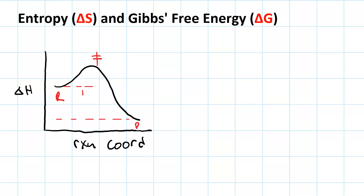Delta H of the reaction is the delta H of the products minus the delta H of the reactants, and it's a negative number. That means this is an exothermic reaction, and enthalpy favors it. Having a negative delta H is favorable.